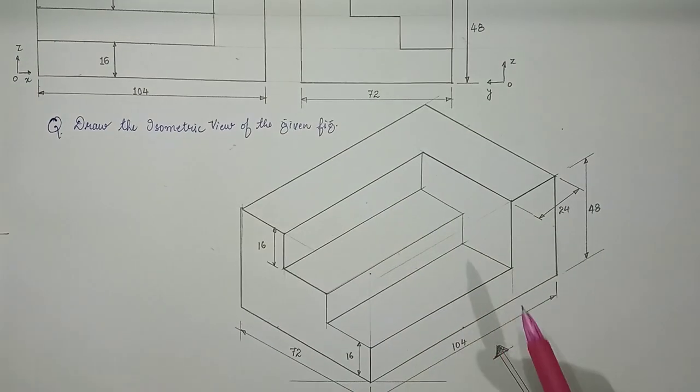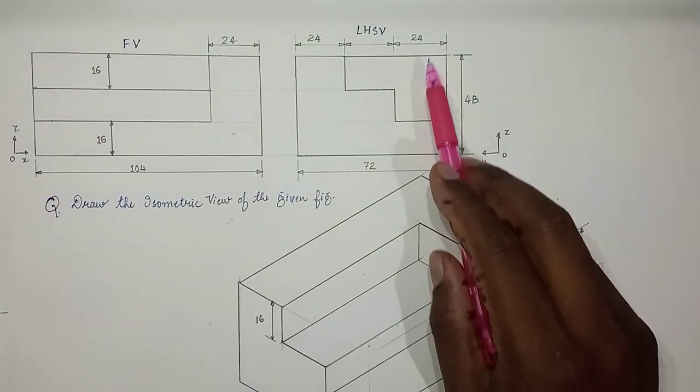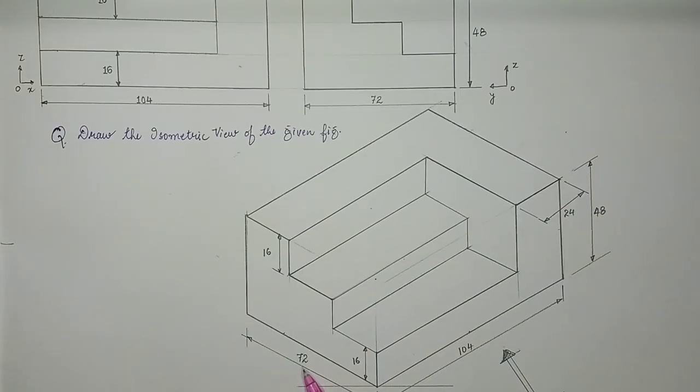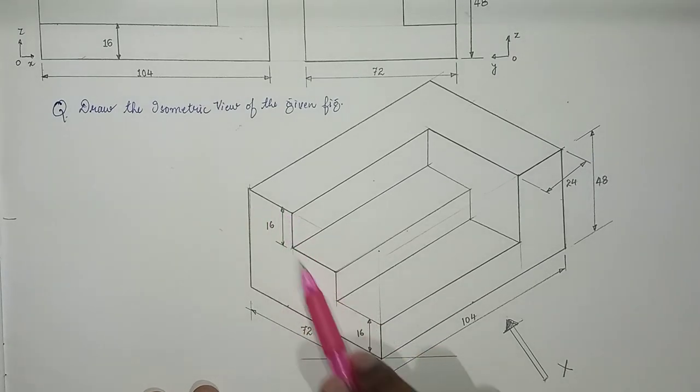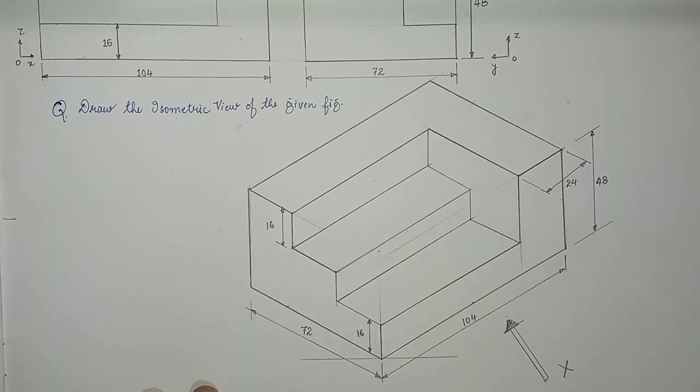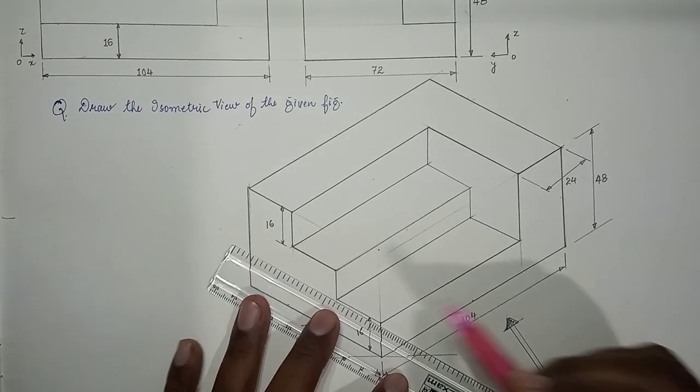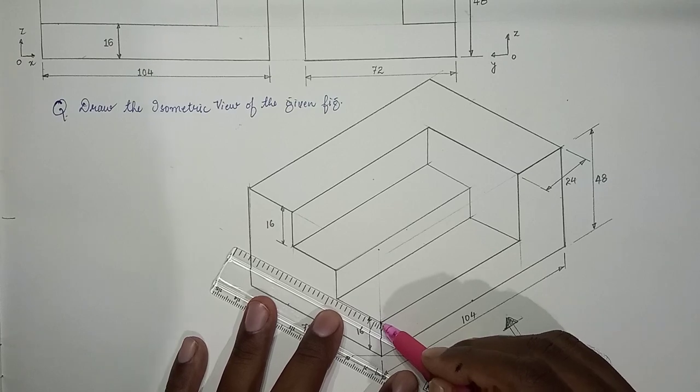We have three 24s are 72. So this 72 is broken into three segments of 24 along y-axis - 24 along y and 24 along y. And then you can highlight the required section.